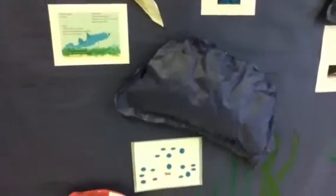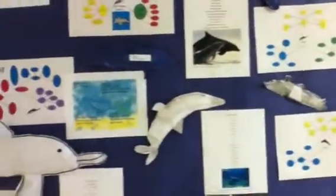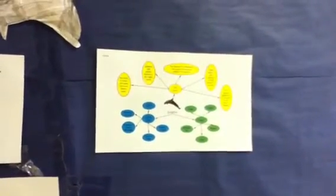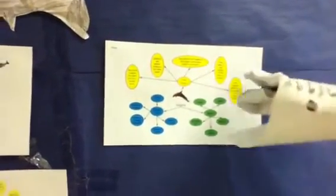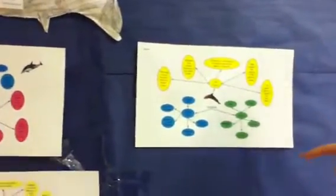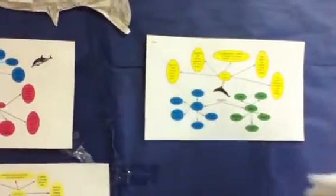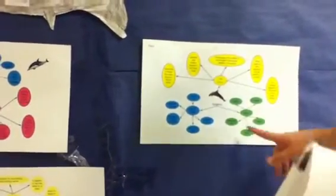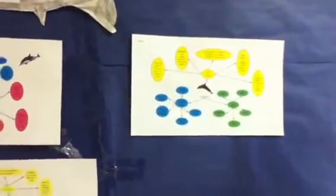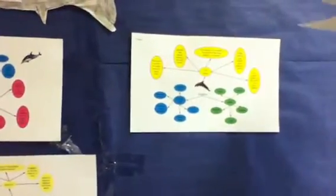We took our packet of information to the computer lab. We used the program Inspiration. We typed our animal in the middle of the graph, then put 'does,' 'looks like,' and fun facts in groups.